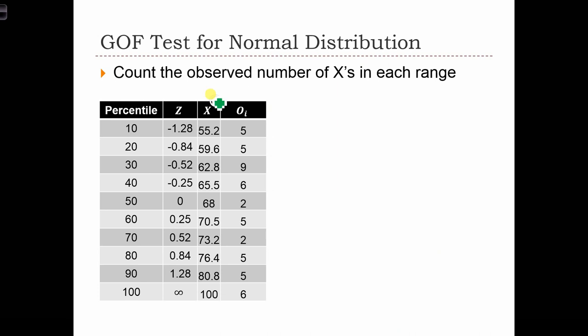Once we know what our cutoffs are in our x's, we can look at our data table and count how many x's we actually observe in each of our percentiles. So in order to do that, we first see how many observations are between 0 and 55.2.